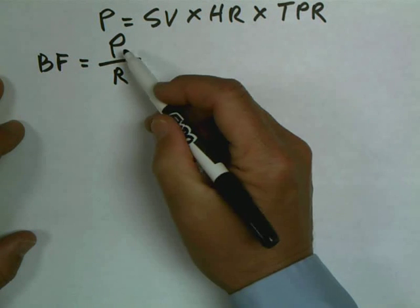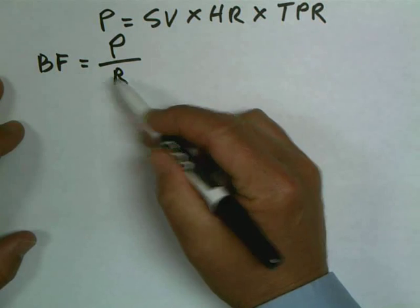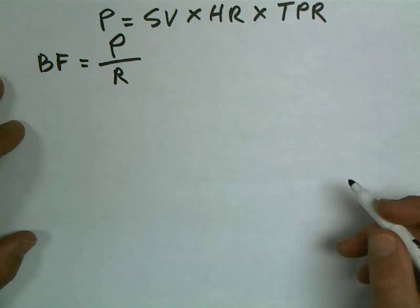The blood flow is going to increase when we increase pressure. Blood flow is going to decrease when we increase resistance because resistance is inversely related to blood pressure.